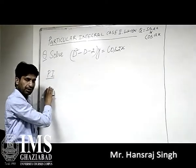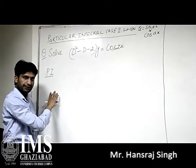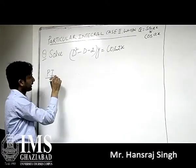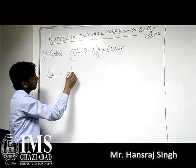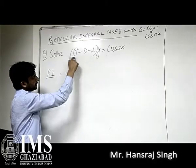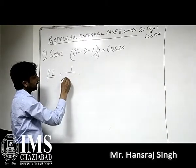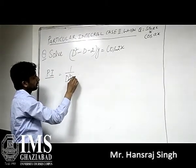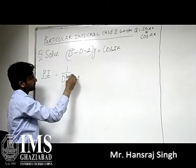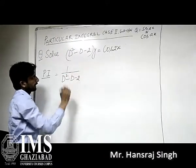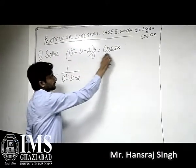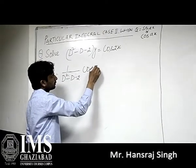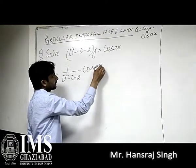In last classes we have the complementary function. The particular integral is equal to 1 upon F(D). This is the entire function: 1 upon (D² - D - 2), and Q is cos(2x).